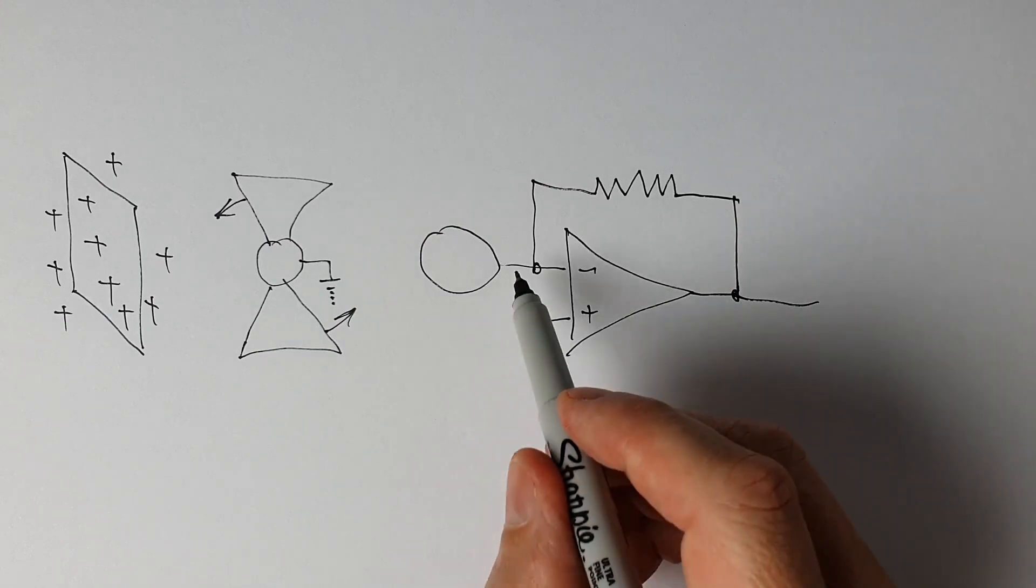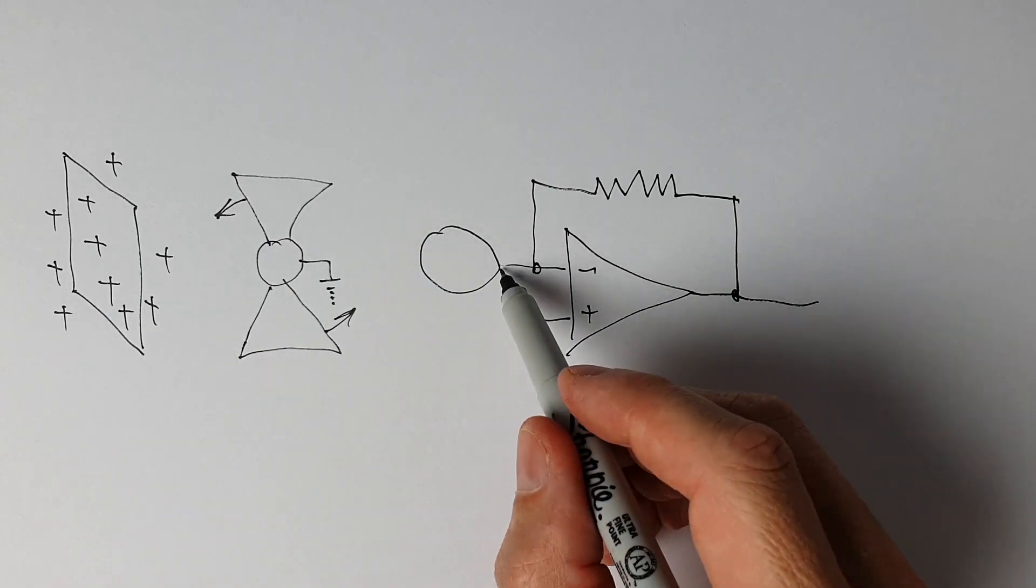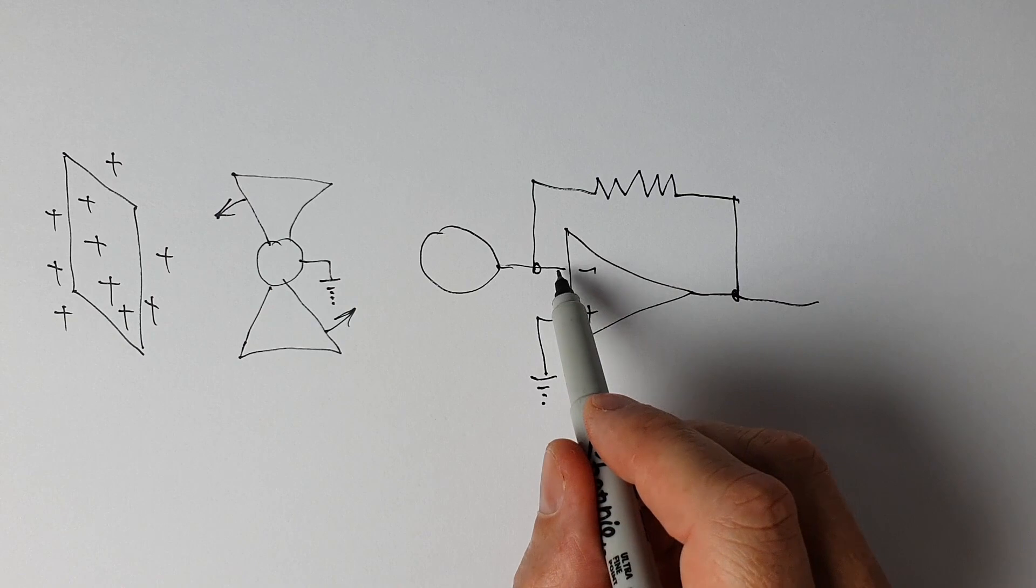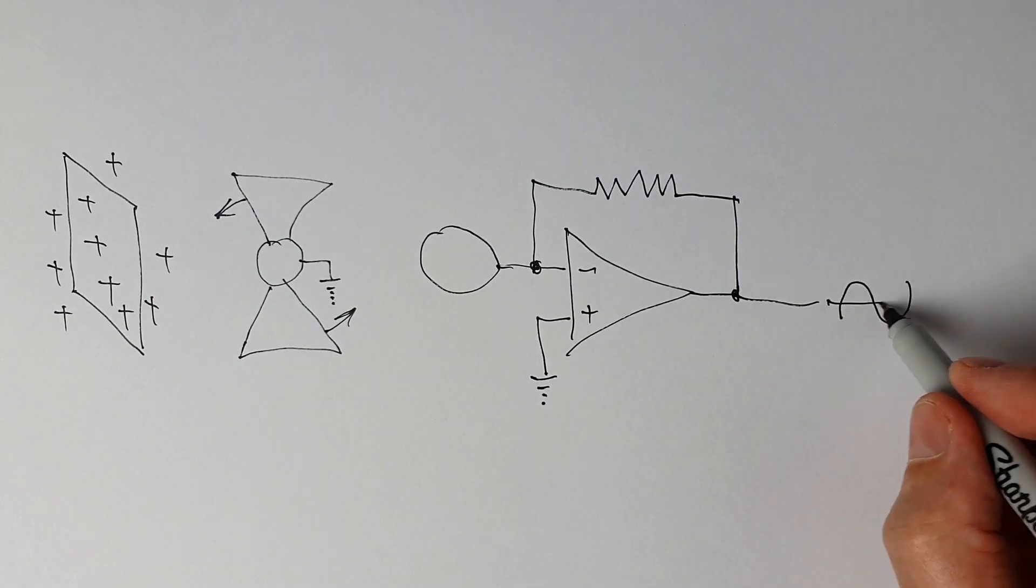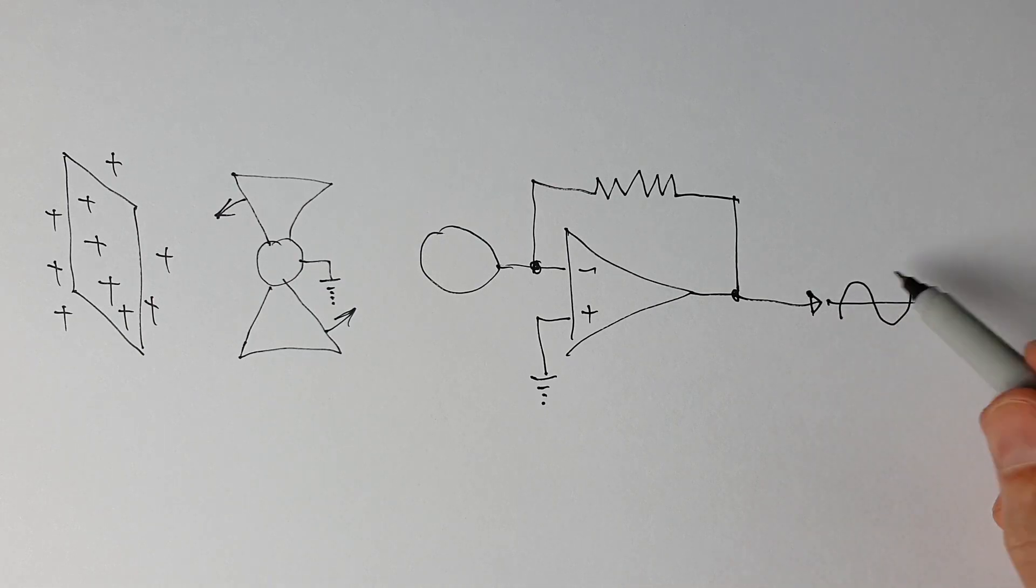So as the current flows in and out of the sensing electrode and into the summing junction here it creates an AC output voltage from the op amp. So this becomes the output of our preamp.